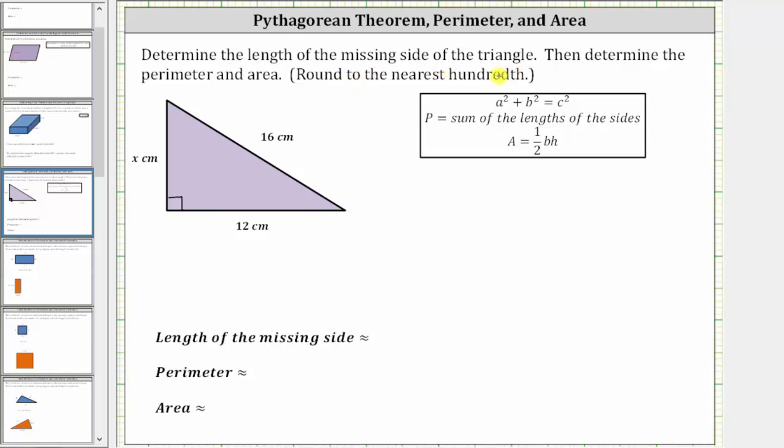Determine the length of the missing side of the triangle, then determine the perimeter and area. Round to the nearest hundredth as needed.